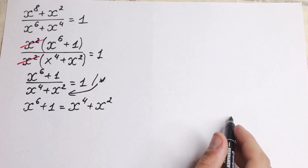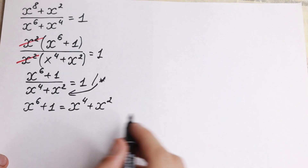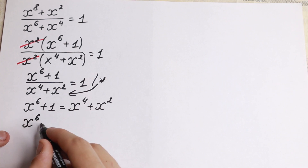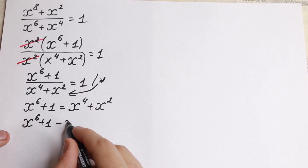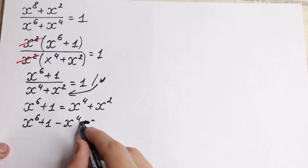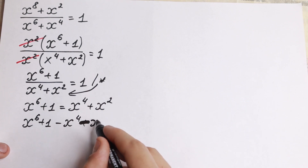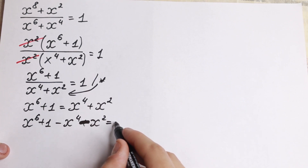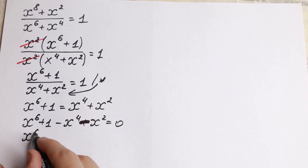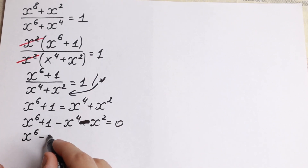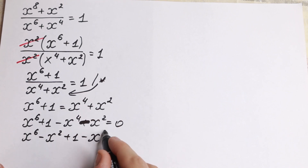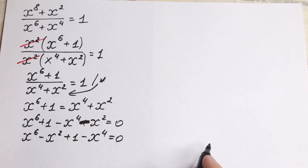So how can I solve it? Of course, let's bring everything to the left-hand side: x⁶ plus one minus x⁴ minus x² equal to zero. We can also write it in another order: x⁶ minus x⁴ minus x² plus one equal to zero.